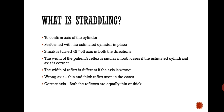Straddling is performed with the estimated cylinder already in place. For example, if you've found plano with minus 1 at 90 degrees, keep those lenses in the trial frame, remove your working distance lens, keep your objective retinoscopy findings in the trial frame, and then start the straddling technique. The streak is turned 45 degrees off axis in both directions.